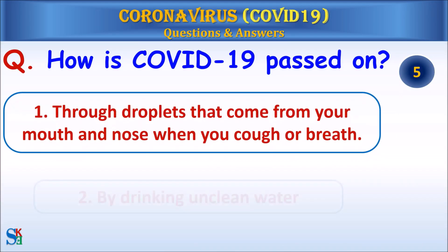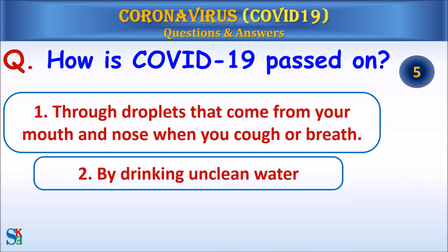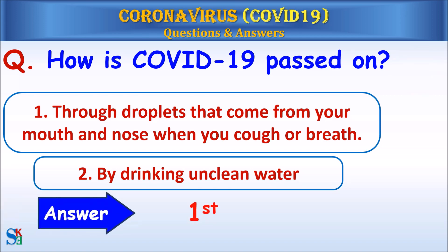Question: How is COVID-19 passed on — one, through droplets that come from your mouth and nose when you cough or breathe, or two, by drinking unclean water? Answer: The first — through droplets that come from your mouth and nose when you cough or breathe.